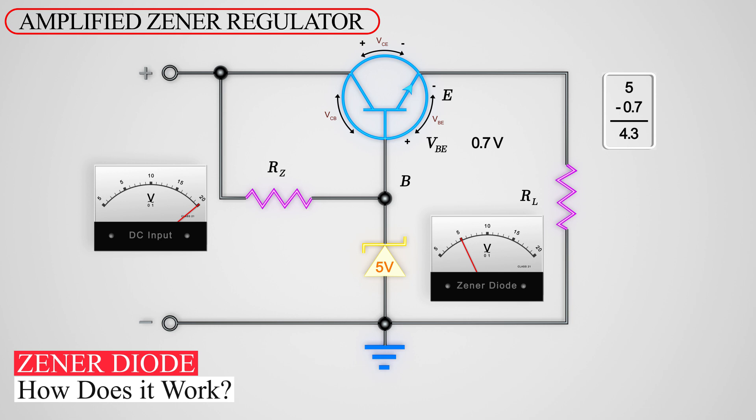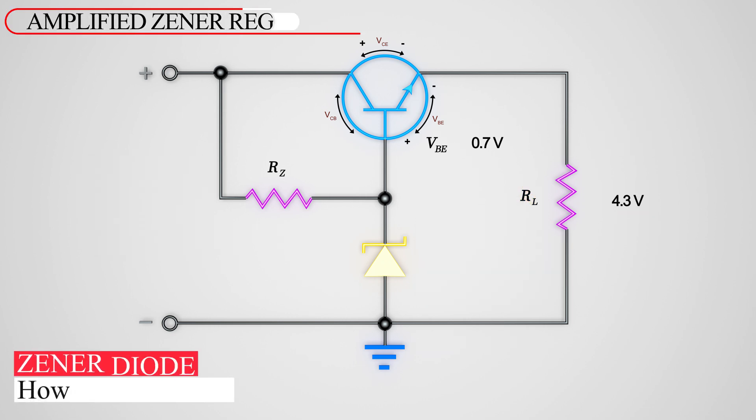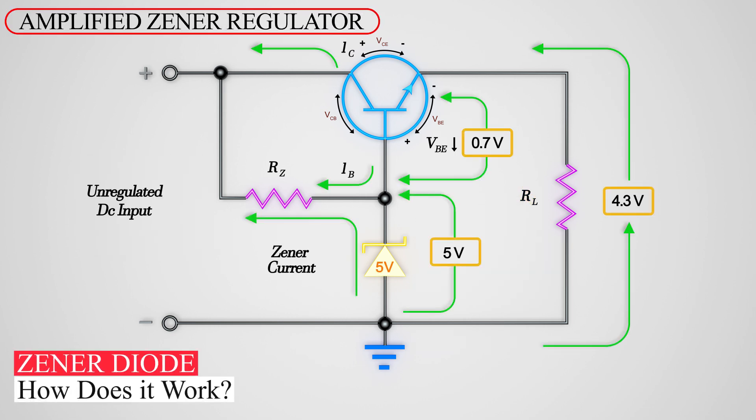Therefore, the voltage level at the RL load resistor will also be 4.3 volts. This variance in voltage levels makes it easier for the current to flow through the circuit.